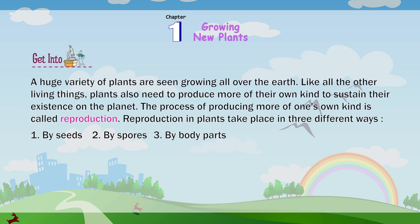A huge variety of plants are seen growing all over the earth. Like all other living things, plants also need to produce more of their own kind to sustain their existence on the planet. The process of producing more of one's own kind is called reproduction.